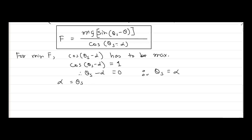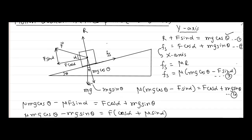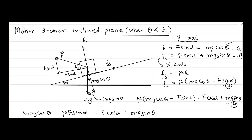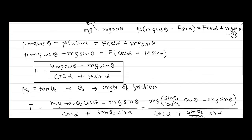When alpha = θs, the denominator becomes 1, and therefore F_minimum = Mg sin(θs − θ). To summarize, alpha is the angle at which the force is applied, theta is the angle of inclination, and θs is the angle of friction. We can use this equation to find the force required to push an object down an inclined plane.